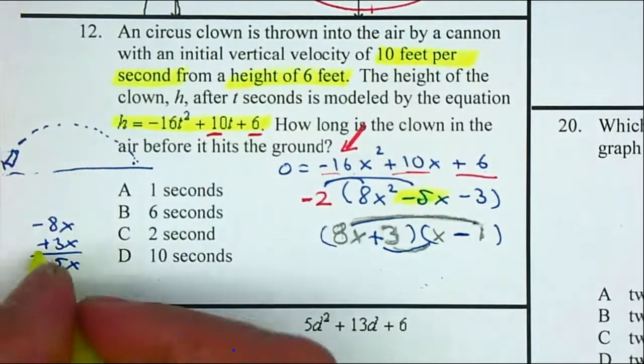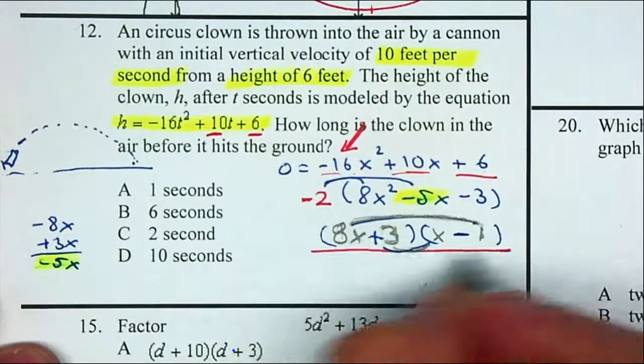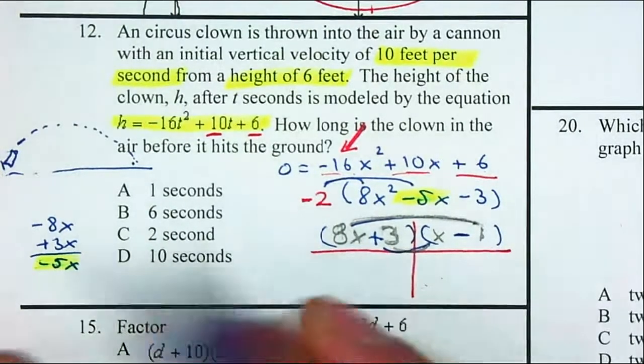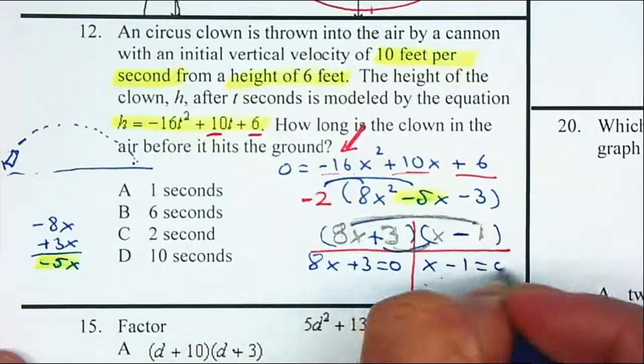Now I use my zero product property. I'm going to have 8x + 3 equal to 0, and x - 1 equal to 0.